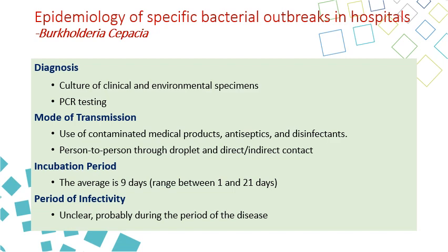Transmission is through contaminated medical products — antiseptic solutions or disinfectants — and this is usually what starts the outbreak. Later on, when multiple patients develop pneumonia or bloodstream infection, there could be possibility of person-to-person transmission through droplet or direct contact, especially in pneumonia cases. It usually starts with cases exposed to contaminated medical products, antiseptics, and disinfectants, and later becomes person-to-person. The incubation period is usually 9 days, ranging from 1 day to 3 weeks. The period of infectivity is unclear but probably continues as long as the contaminated products are being used.